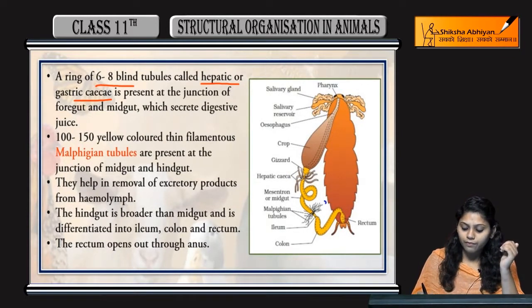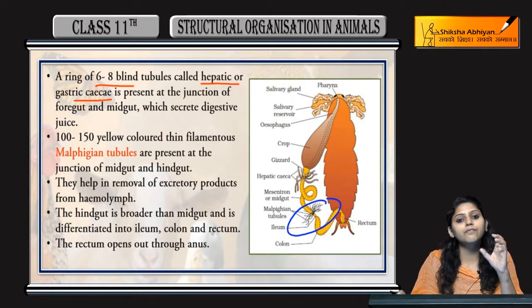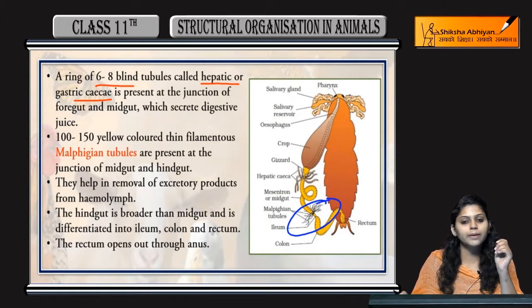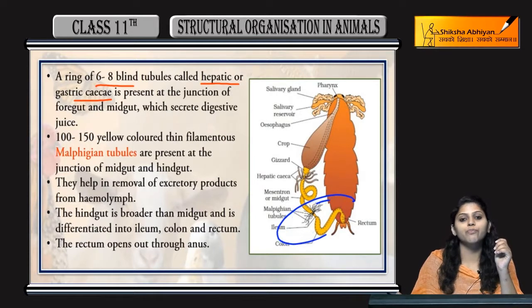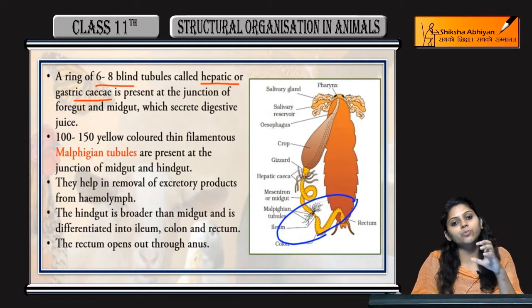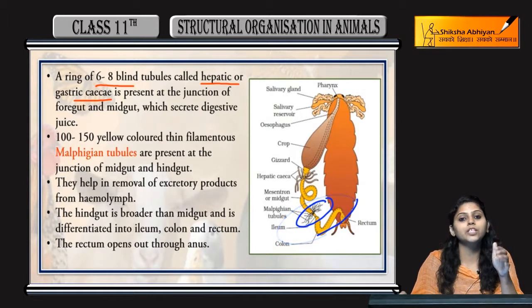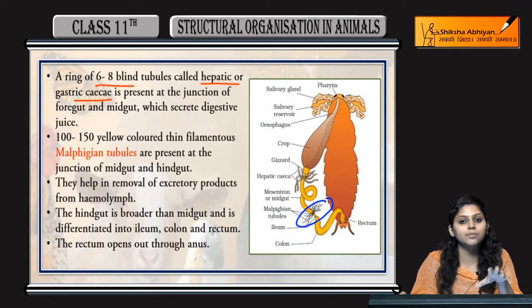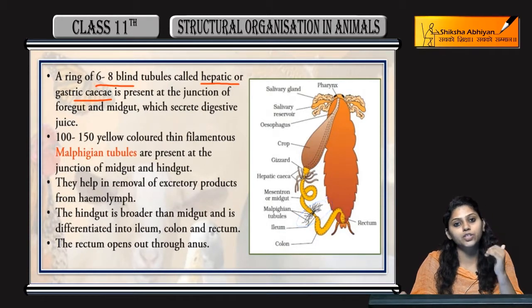There are 100 to 150 yellow-colored thin filamentous structures called Malpighian tubules, present at the junction of the midgut and hindgut. The Malpighian tubules help in the removal of excretory products — as many excreted substances or waste materials are excreted through the Malpighian tubules.